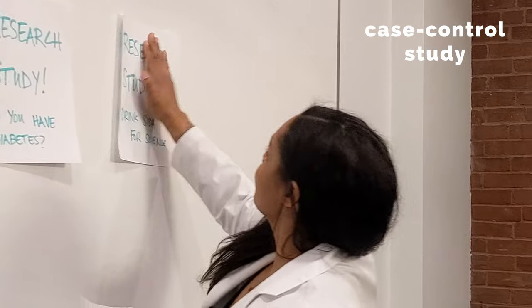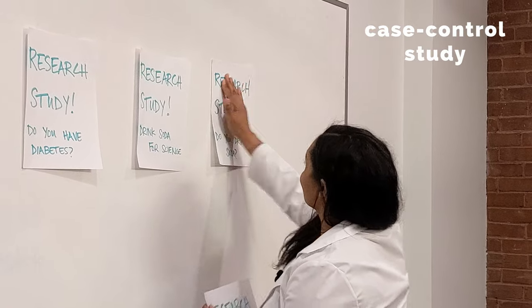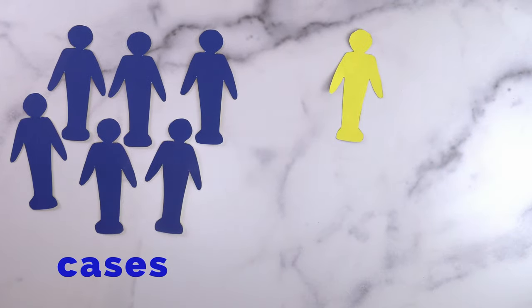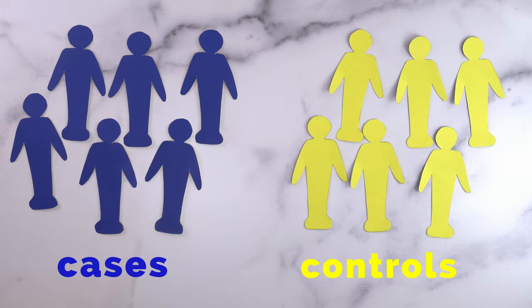A case-control study is a type of observational design in which researchers recruit a group of people who have an outcome — the cases — and a group of people who don't have the outcome — the controls — and then look at their past exposures to gain insight about risk factors.